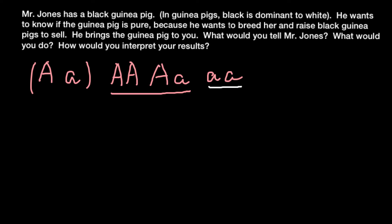But if we have a heterozygous black guinea pig and cross it with another phenotypically black but probably also heterozygous guinea pig, the result would be a segregation of this trait. We would have some progeny that is going to be black and some that is going to be white. So how do we find out if his guinea pig belongs to the homozygous dominant category, or if it is pure breed?